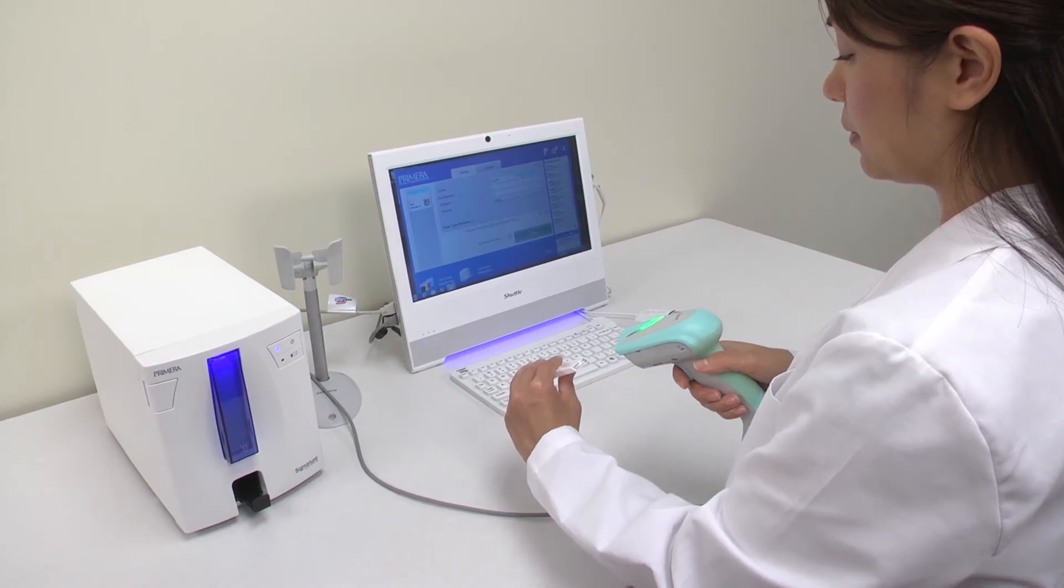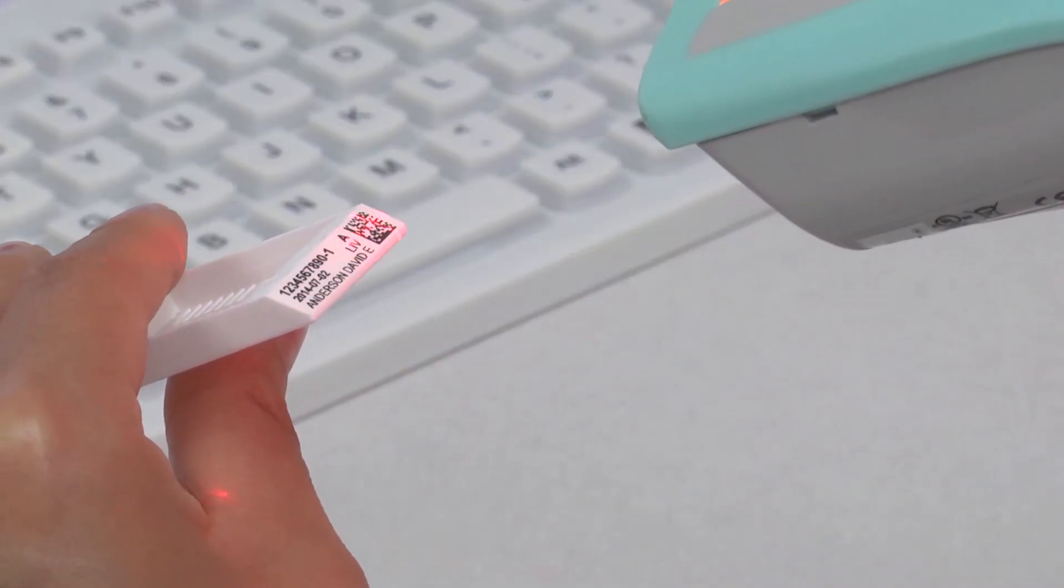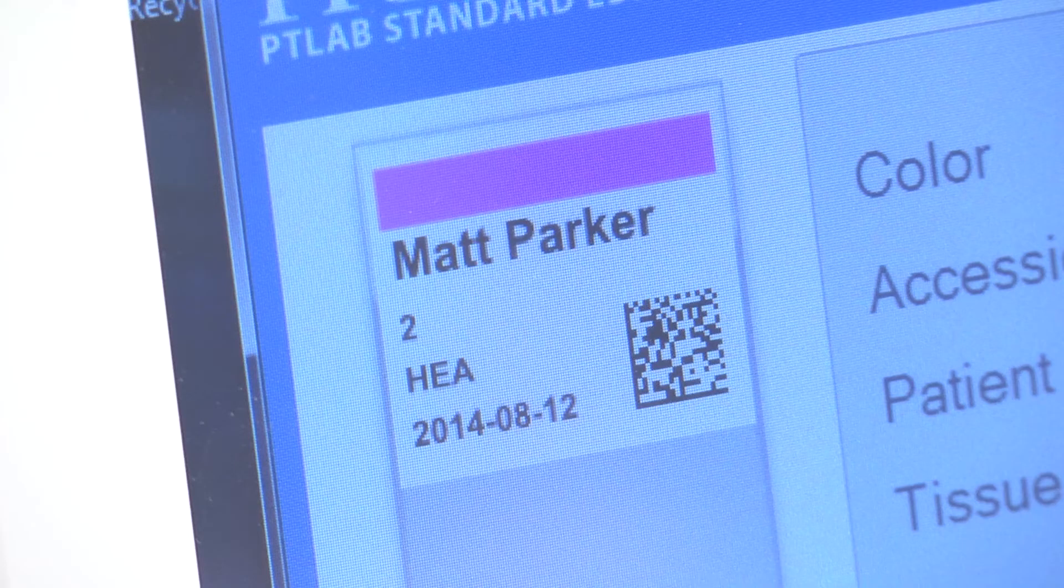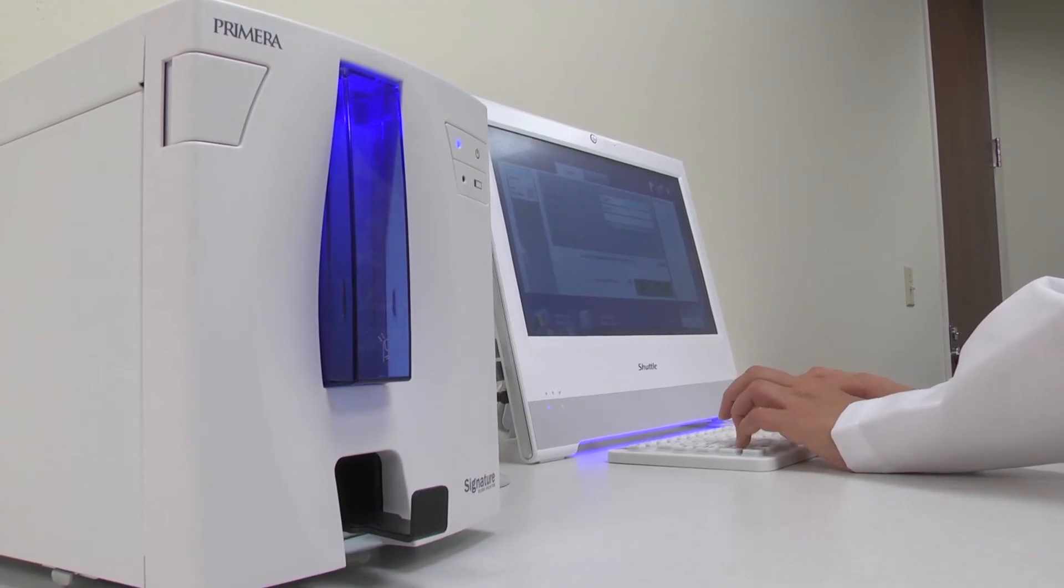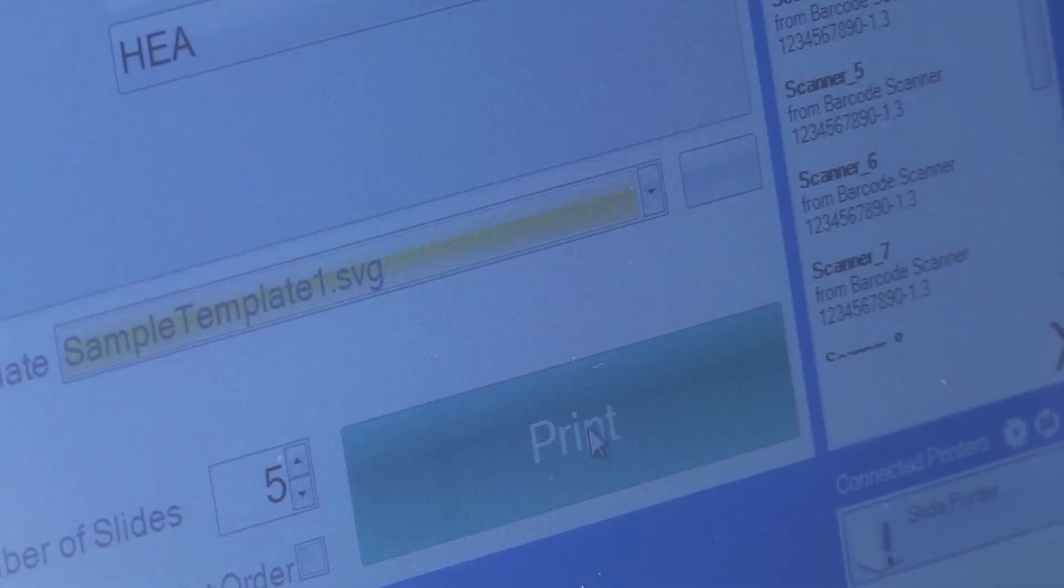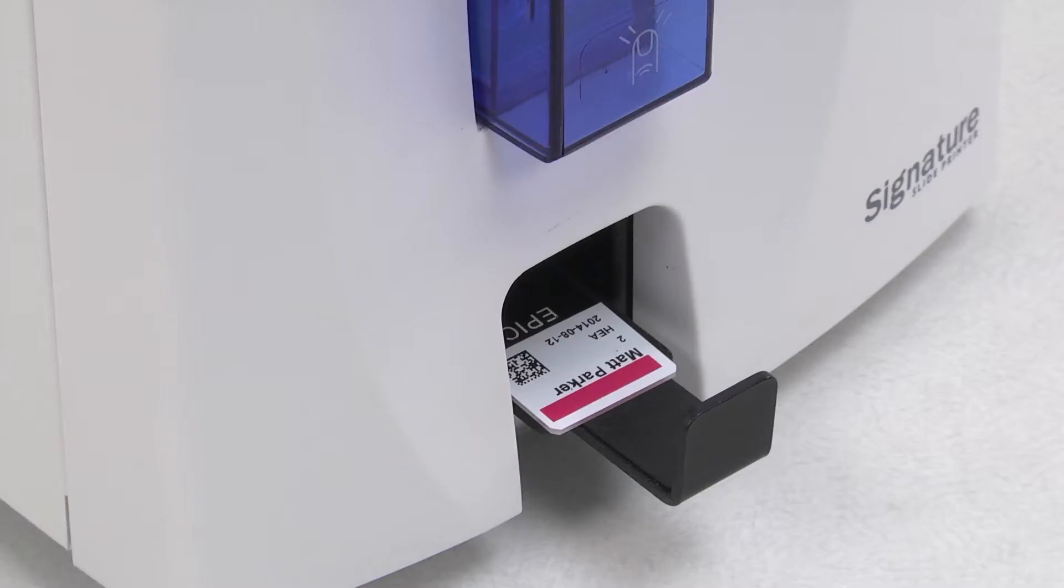Signature slide printer can then scan barcodes from printed cassettes and automatically populate the information into a pre-designed template in Primera's PT lab software. The needed information is then printed in black or color directly onto the slide.